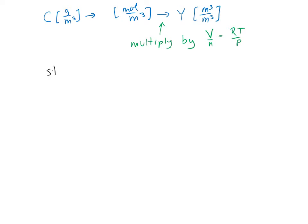So under standard conditions, in order to get Y, we take our concentration, we divide by the molecular weight, that's the first step, that gets us to moles per cubic meter. And then we multiply by this volume per mole, which is 0.0245 cubic meters per mole.